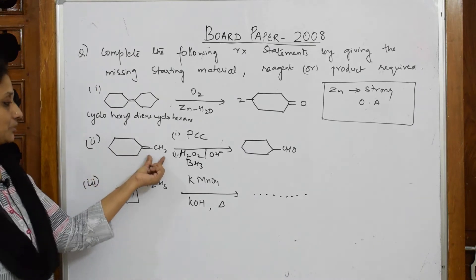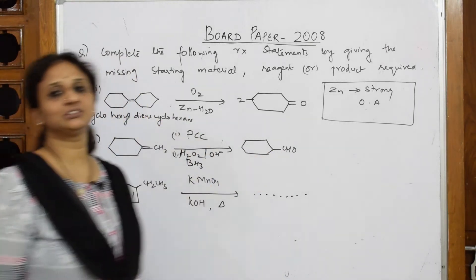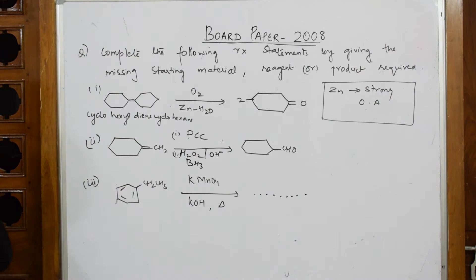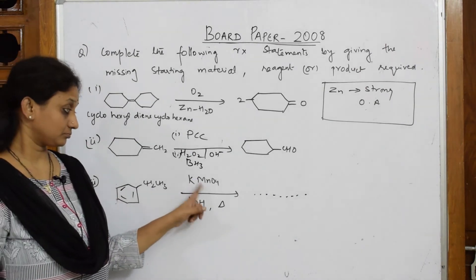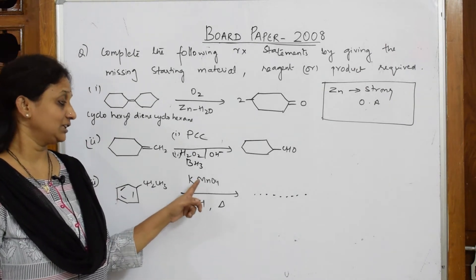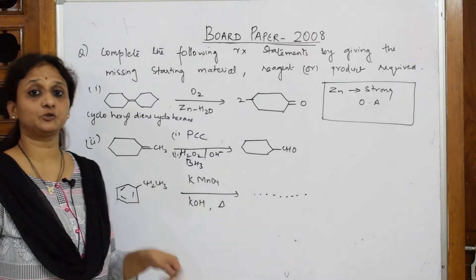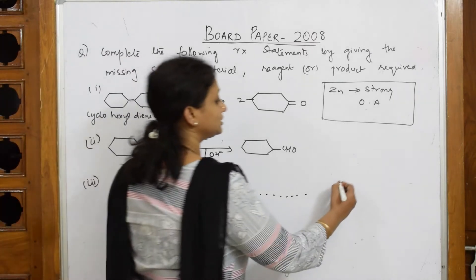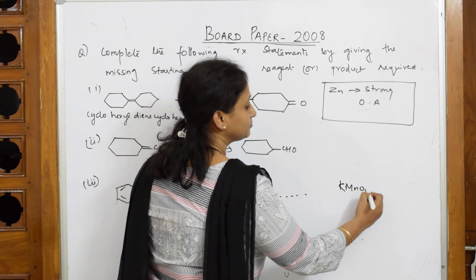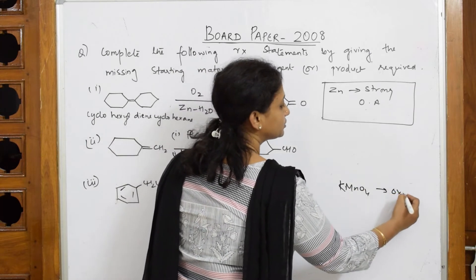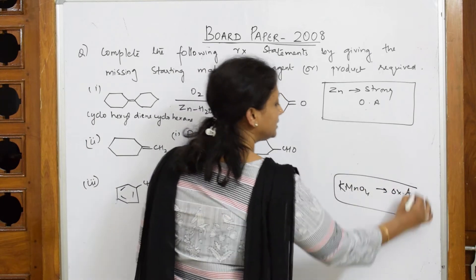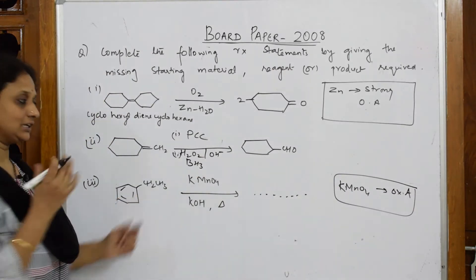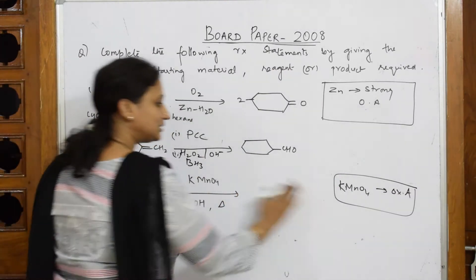Thus if you see this product, you can directly use PCC. Now let's come back. In this particular reaction, what is given to us? KMnO4. What is KMnO4? KMnO4 is an oxidizing agent - again same story. I'm writing oxidizing agent, simple.